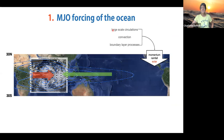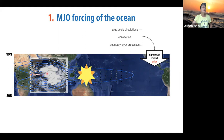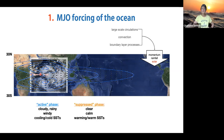The MJO forcing of the ocean is the first part of the feedback cycle. In the suppressed phase, you have suppressed cloudiness, calm winds, and large surface solar heating to the upper ocean. In the active cloudy phase you have the opposite—enhanced cloudiness and reduced solar radiation—resulting in surface warming during the suppressed phase and surface cooling during the active phase. This produces an SST signature roughly in quadrature with MJO convection: warm SSTs to the east and cooler anomalies to the west.